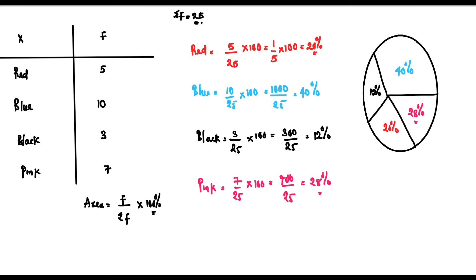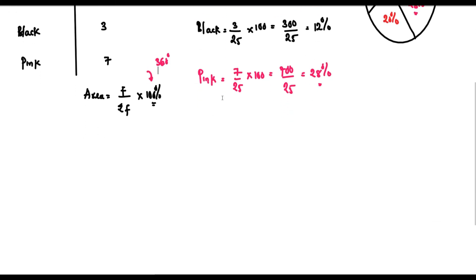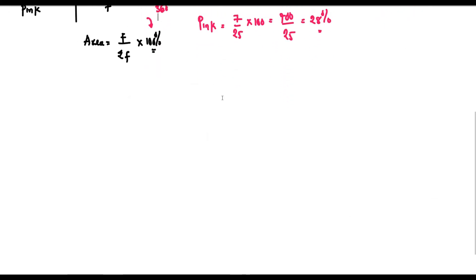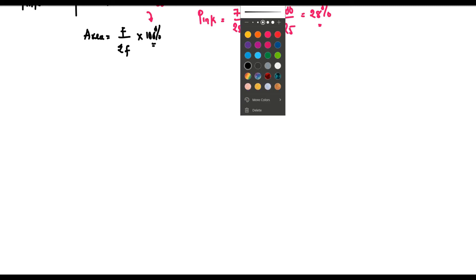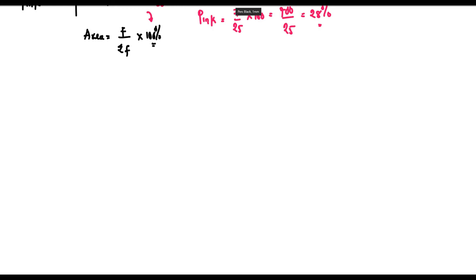We can also do the same thing, but this time by the angle subtended by the radius. The formula is still the same, just replacing 100% with 360 degrees. So the formula becomes: angle equals the frequency of the variable divided by summation f, times 360 degrees.